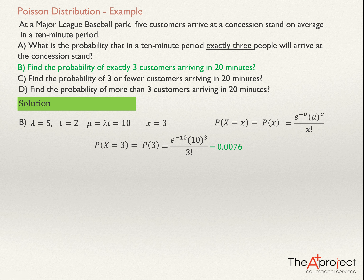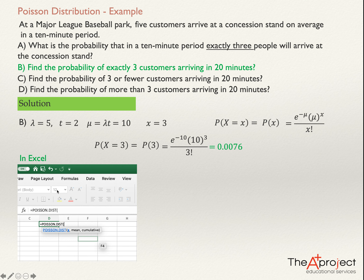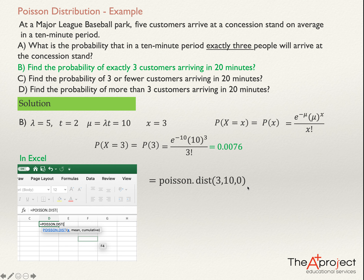If you are going to solve this in Excel, open Excel and in any cell type the Poisson distribution function. Don't forget to type the equals sign first. The value of x is three, the value of the mean is ten, and this is not cumulative since the question asks for exactly three. So type: equals POISSON.DIST, three, ten, zero. Press Enter and you get the answer: 0.00756667. Round your answer as needed. That is the answer to question B.